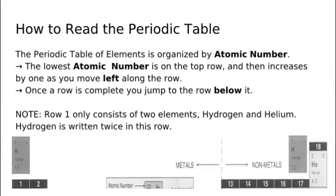How to Read the Periodic Table of Elements. The periodic table of elements is organized by atomic number. The lowest atomic number is on the top row in the left corner, and then increases by 1 as you move left along the row. Once a row is complete you jump to the row below it.